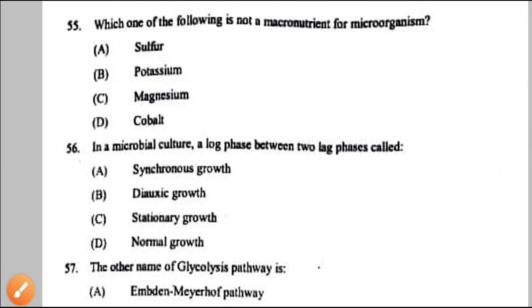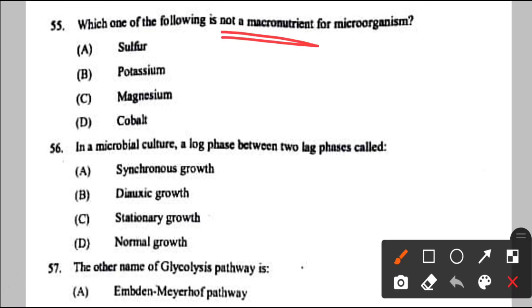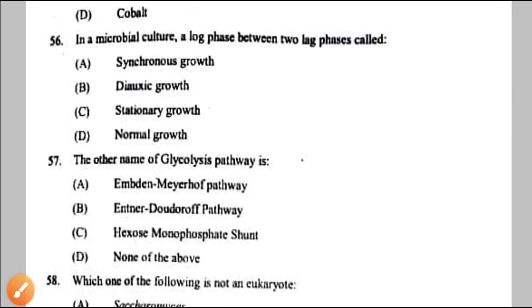Question number 55: which is NOT a macronutrient for microorganisms — meaning which is a micronutrient? Macronutrients include nitrogen, phosphorus, sodium, calcium, magnesium, and sulfur. Cobalt is a micronutrient, not a macronutrient — that is the answer.